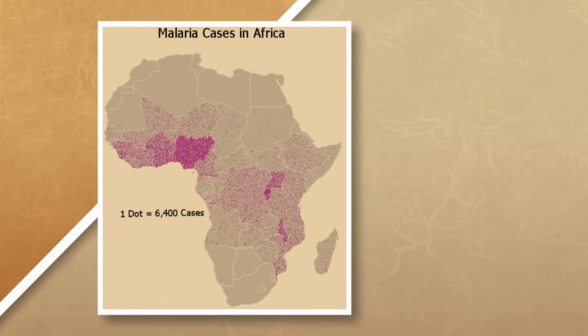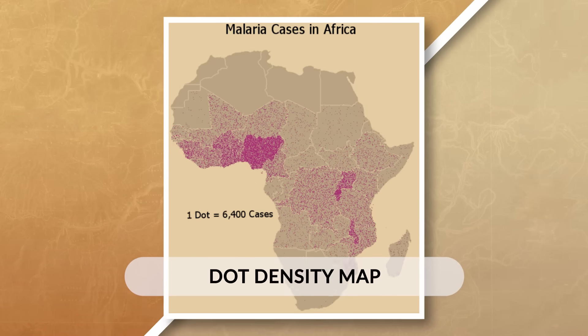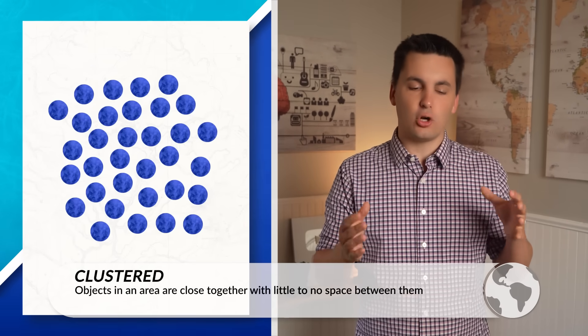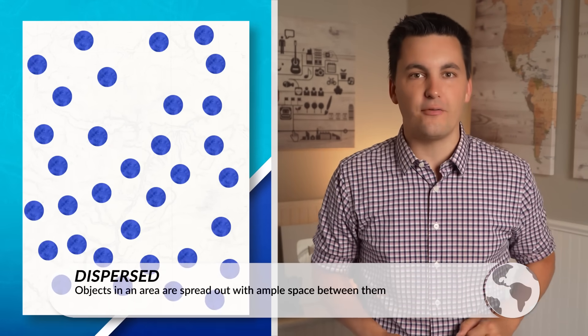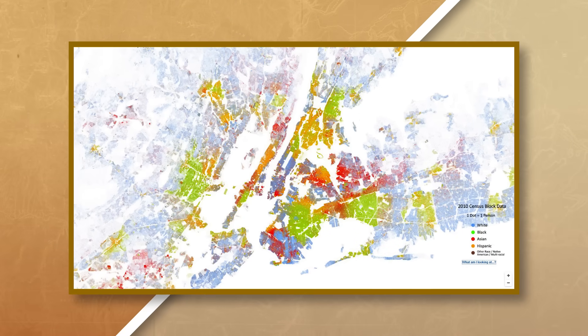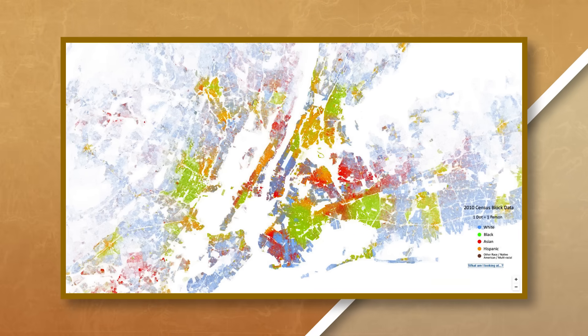Now let's say we want to be more specific with where data on our thematic map is displayed. We could use a dot density map. These maps show data with points at the place the data is occurring, allowing us to see spatial distribution, but can become confusing if the data is clustered together. If data, objects, people, or information are close together, it means there's little space between them — everything is packed together. If it is dispersed, it means it's spread out over a geographic area. For example, the racial dot map, which uses information from the United States Census, shows where people are living in the US based on their race — each dot is one person. Notice that in larger cities with higher density, the dots seem to blend together, making it difficult to clearly see each dot.